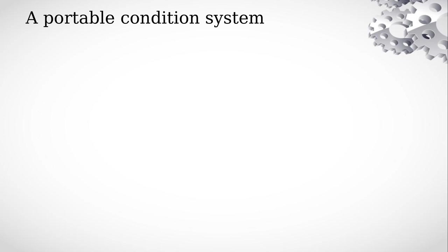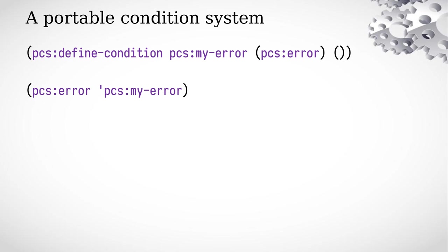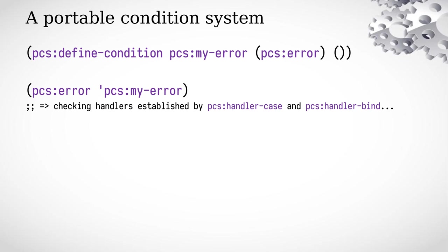Let us play with our condition system just a little bit. In our condition system we can do one of the basic things, which is defining a new condition type. A call to PCS:define-condition defines a new guest condition type named my-condition. We can modify it to instead create a new error type named my-error. We can then try signaling it via the error function, which first of all signals the condition. Signaling means that we check all handlers established by the guest handler-binding operators, which are handler-case, handler-bind, and also ignore-errors.